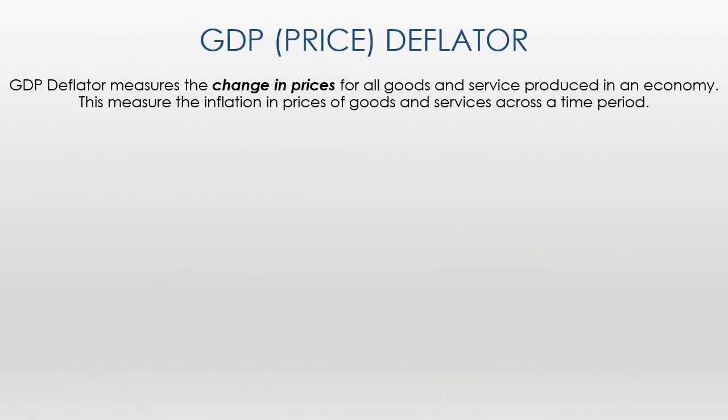The GDP deflator — also called the GDP price deflator or implicit price deflator — is a measure of the change in prices, not in the quantity selling, but the change in price of goods or services across a period of time. What this is measuring is basically inflation for us. Since we're talking about real GDP, we need a base unit, which is generally a year. Let's take a look at a chart using a base year of 2012, which comes from the Federal Reserve Bank of St. Louis.